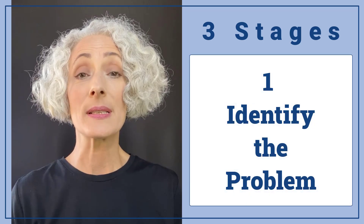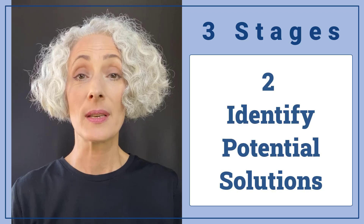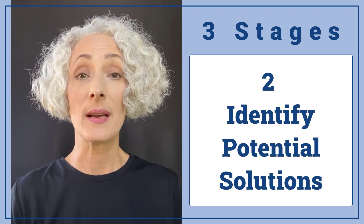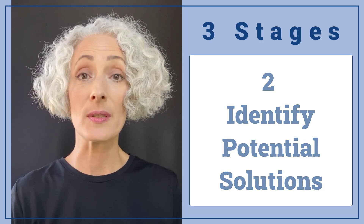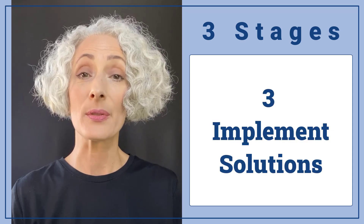Decision-making models are essentially three stages. One is identify the problem. Two is identify potential solutions. And three is implement those solutions that you've discovered.